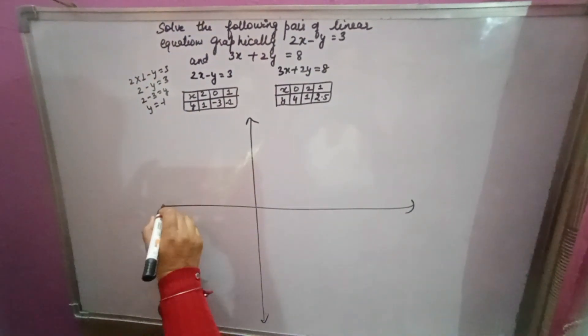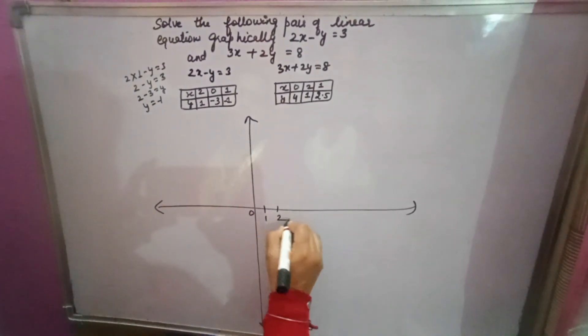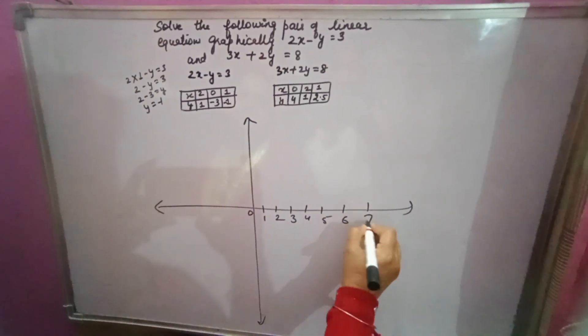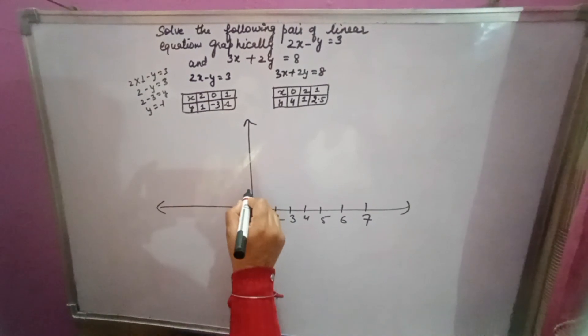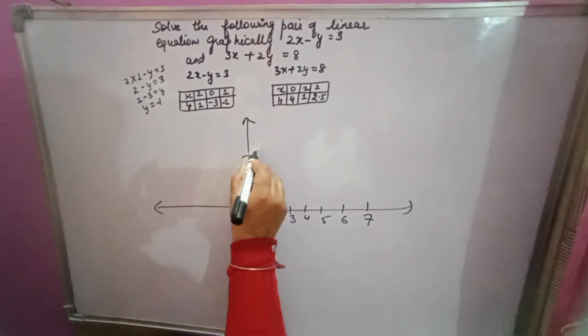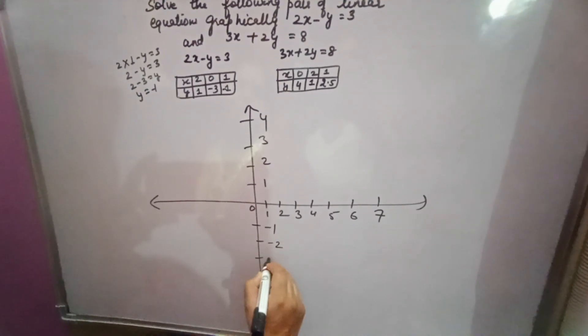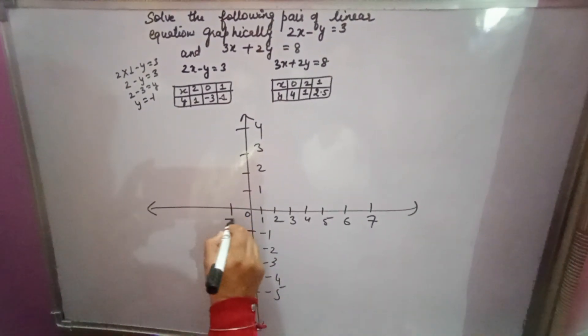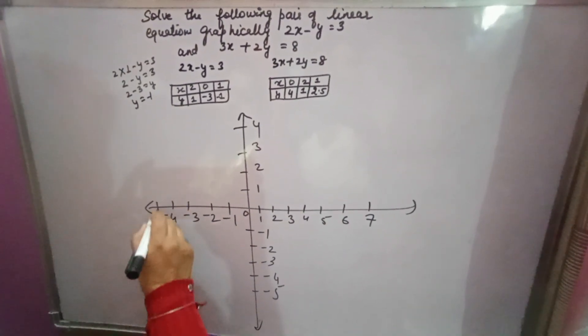This is y axis. This is x axis. x is 0, 1, 2, 3, 4, 5, 6, 7. Positive y axis, you will take 1, 2, 3, 4. Negative y axis, minus 1, minus 2, minus 3, minus 4, minus 5. Negative x axis, minus 1, minus 2, minus 3, minus 4, minus 5.